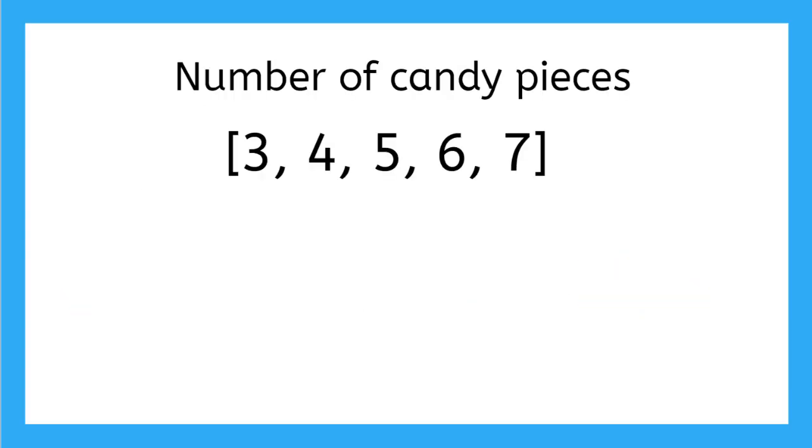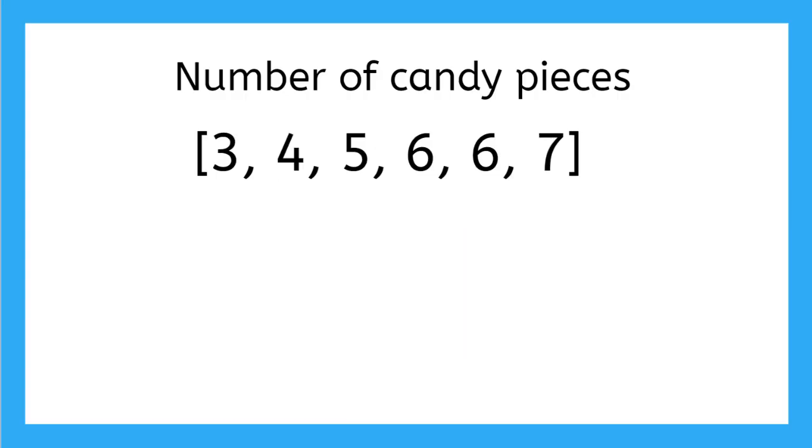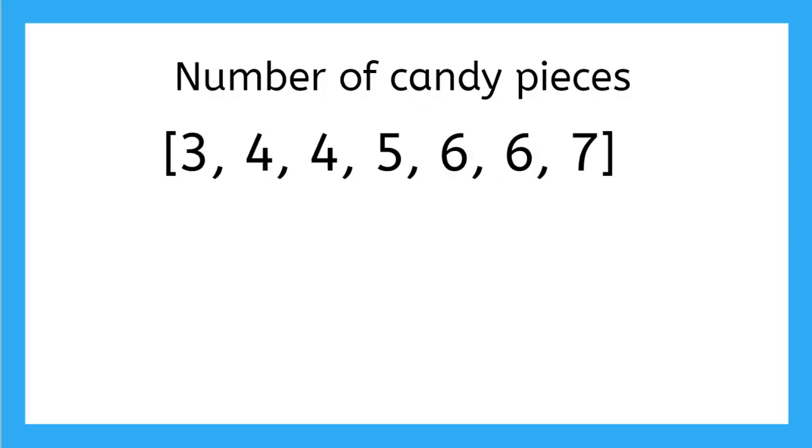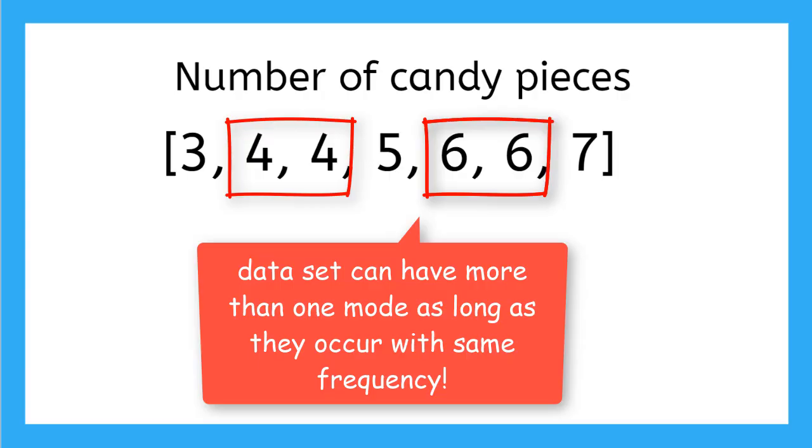If we look at our original data from the five bags of candy, we would say there is no mode since none of the data values appear more than once. But in this data set, when I have six bags of candies, we do have a mode. The data value six occurs twice, which is more than any of the other data values. But a data set can have more than one mode. If this was our data, we would have two modes. Both four and six occur more than the other data values. A data set can have multiple modes as long as they occur with the same frequency, or the same amount of times.